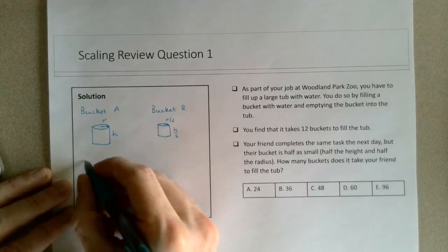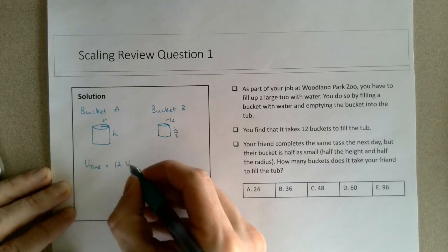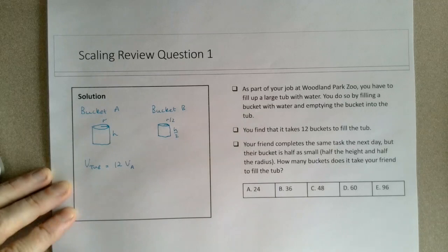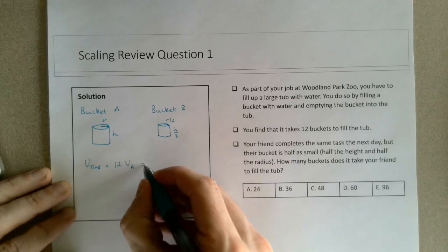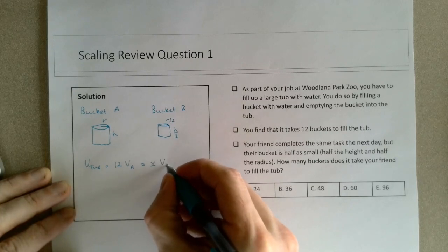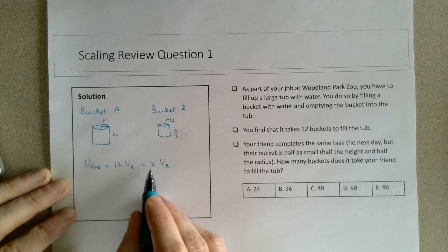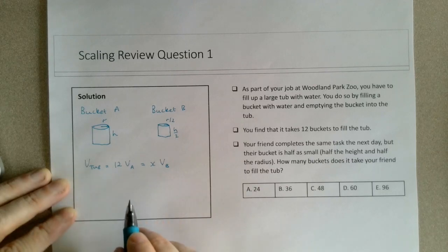So we know that the volume of the tub is equal to 12 times the volume of bucket A, and we're interested in how many buckets, which I'll just use as a variable x, of the volume of bucket B. So basically trying to solve for this quantity x.